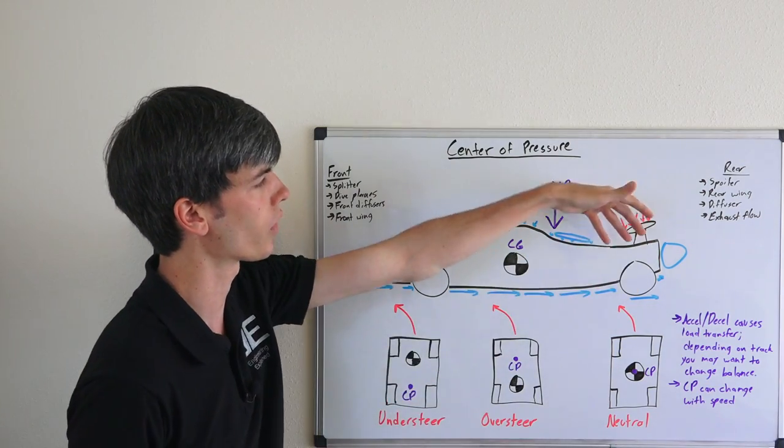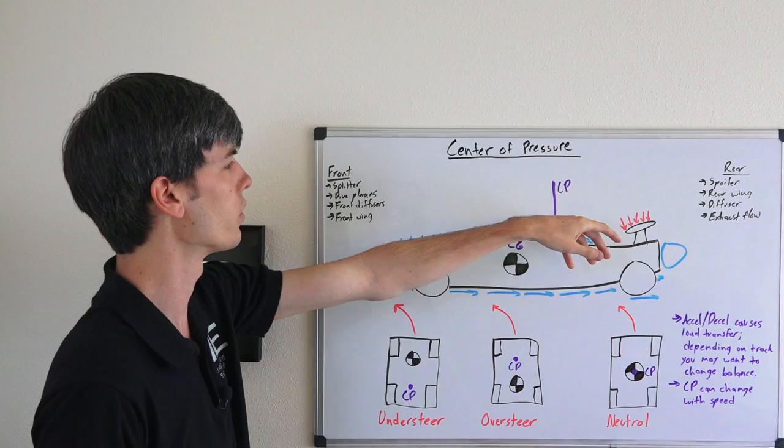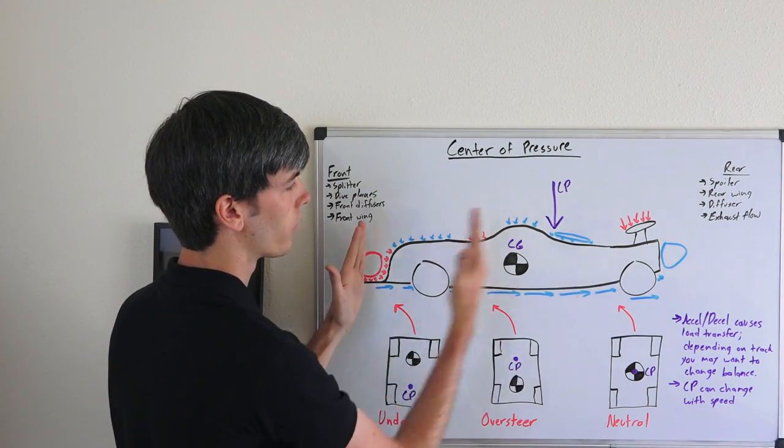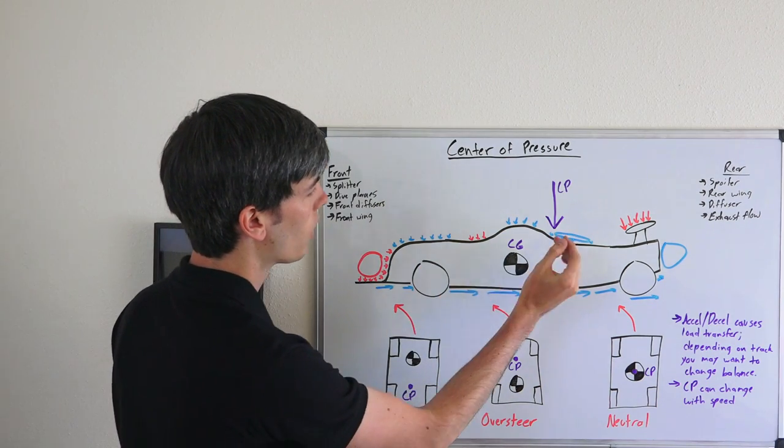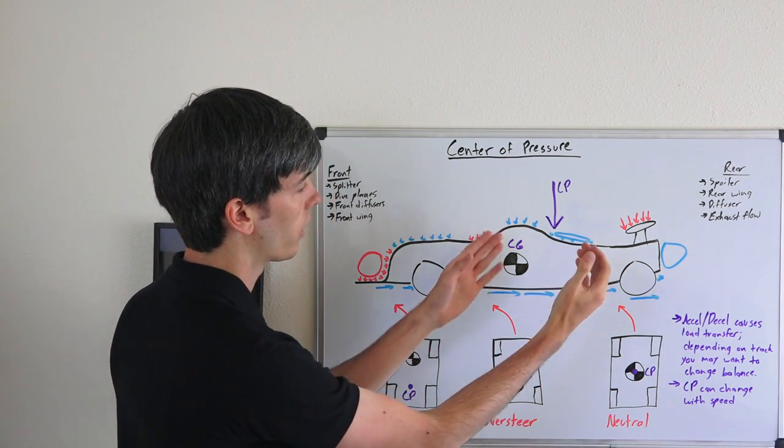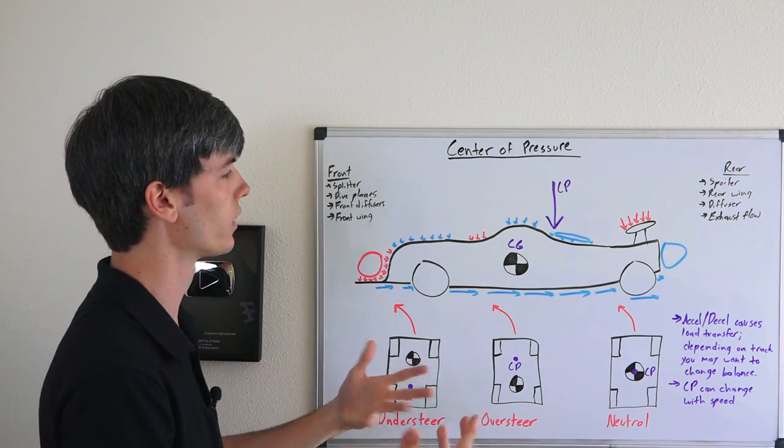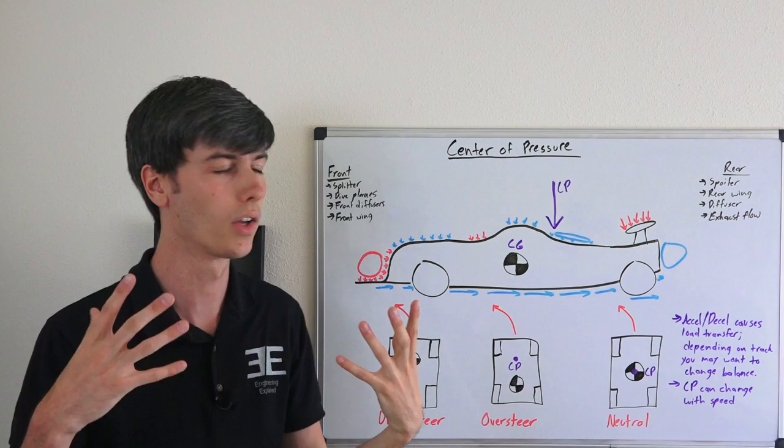And then you've got this rear wing which is also going to be supplying downforce, so you've got high pressure on top of that. When you sum up all these pressures in the vertical area, basically you can come to see where all of those pressures, on average, line up. That's going to dictate some of the performance characteristics of your car.